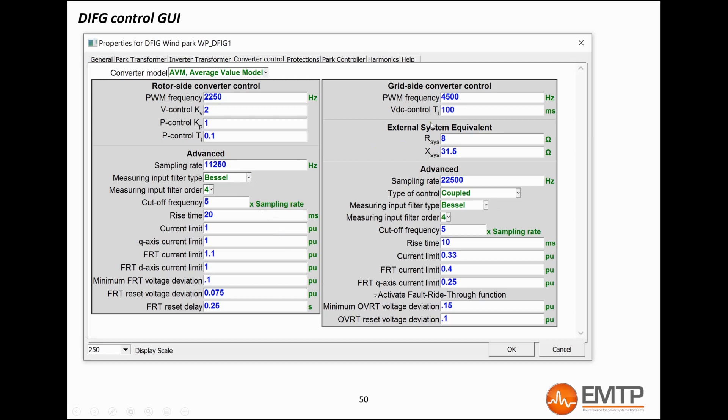The external system equivalent is important to set up as, like I explained a few slides ago, the grid-side converter inner loop gains are calculated using this information. The turbine might become unstable if this data is unset properly.